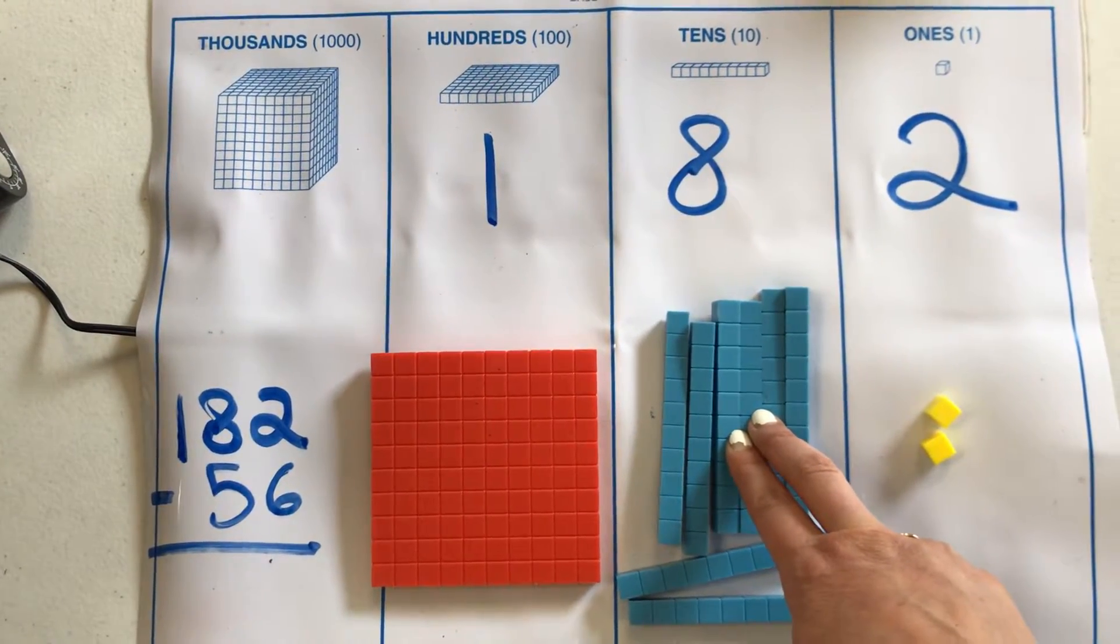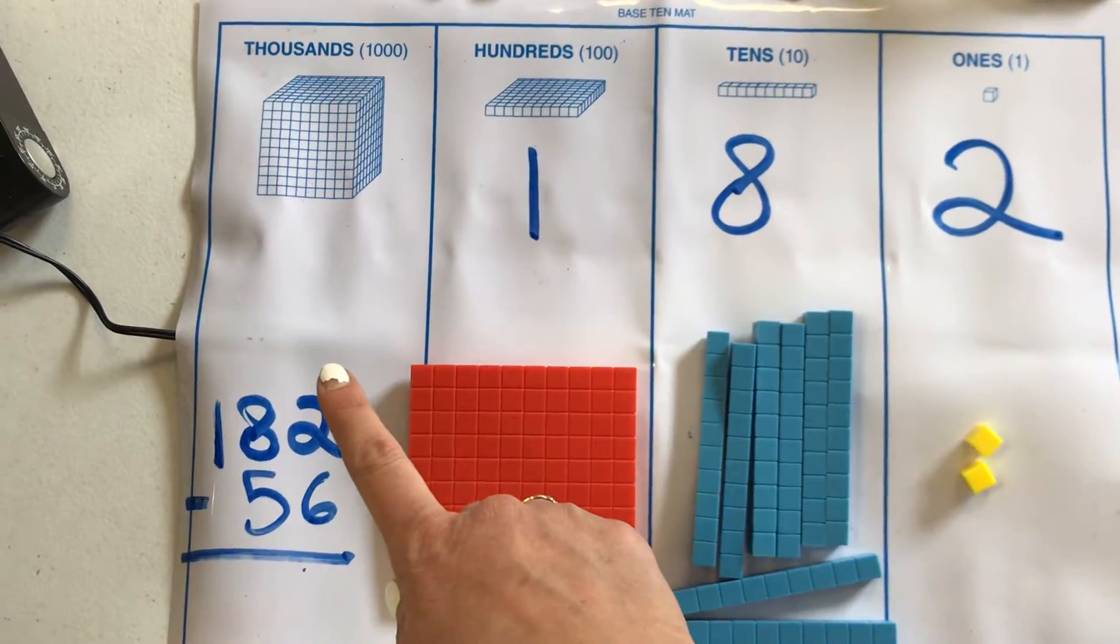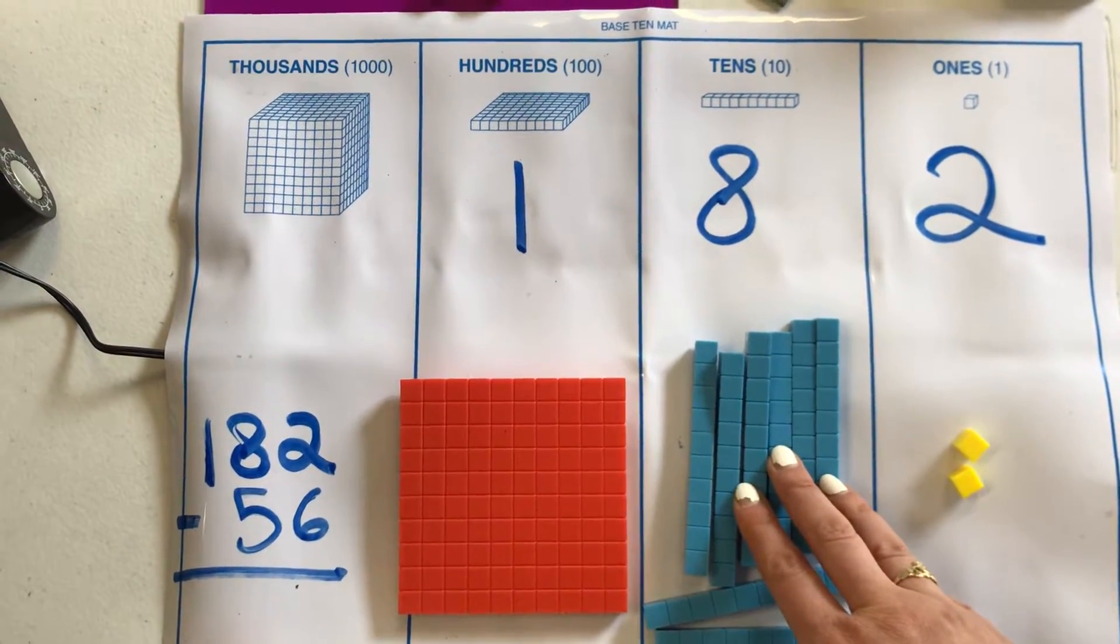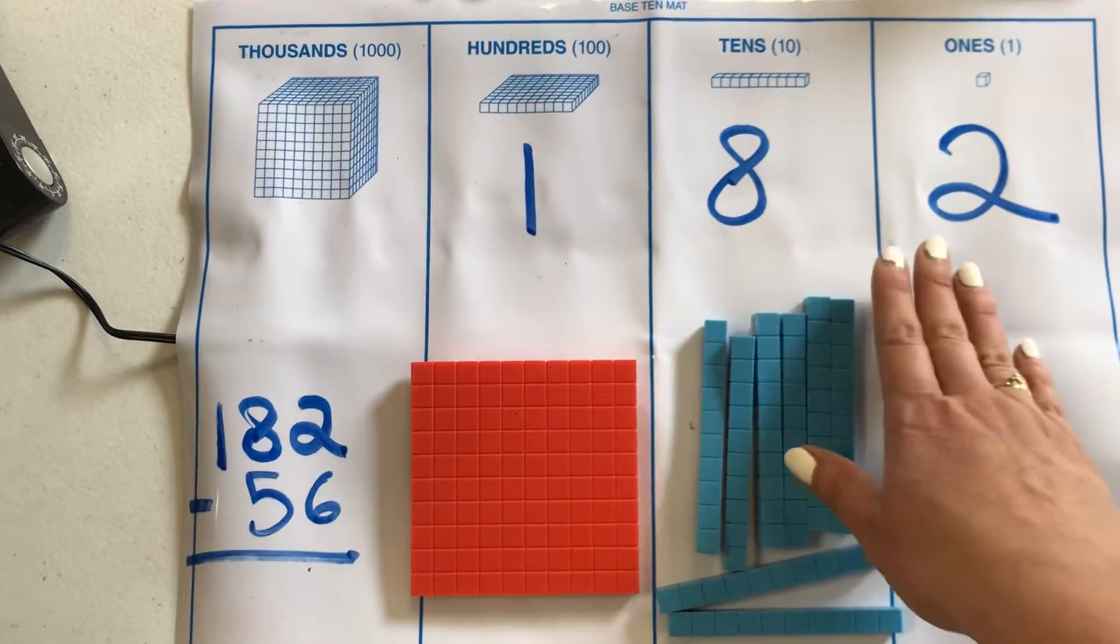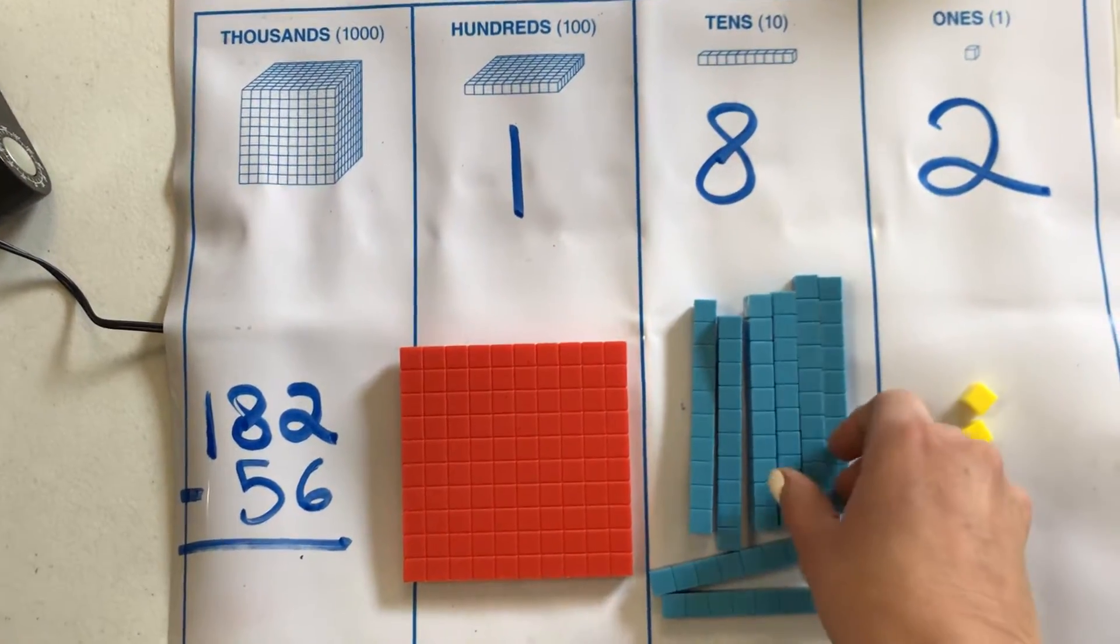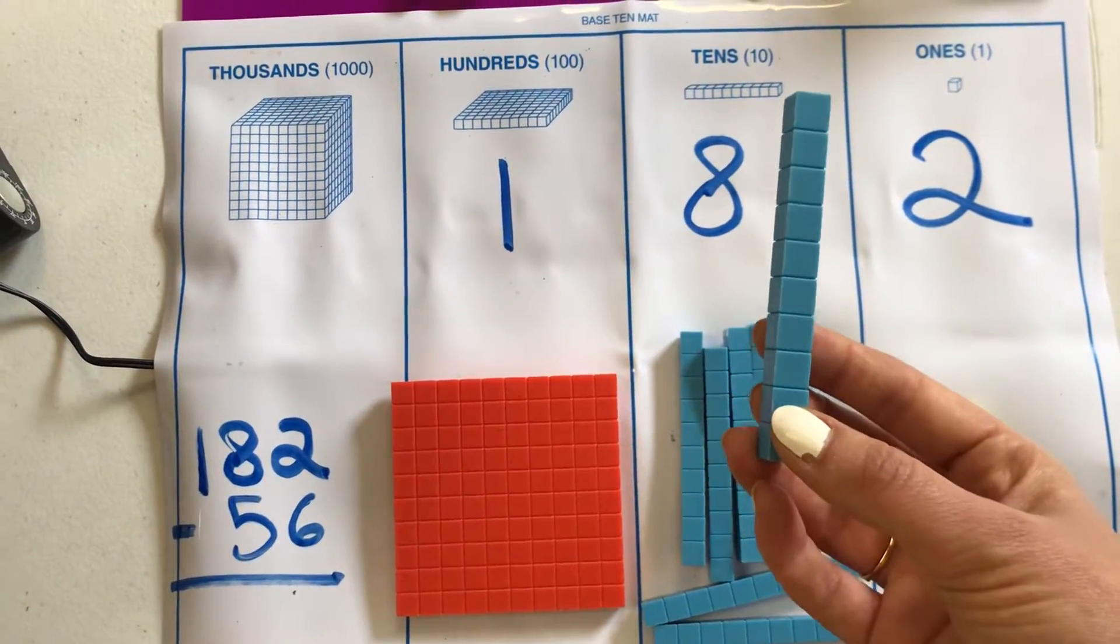So for example, if you wanted to borrow a cup of sugar, you're not going to go all the way down the street. First, you're going to try the next door neighbor, right? So we're going to go to the next door neighbor, the tens place, and ask for a tens stick. So I'm going to take a tens stick and give it to the ones place.